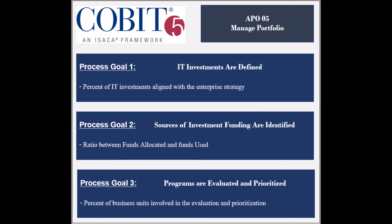The process has six process goals. The first process goal is to ensure that the investments are aligned with the enterprise strategy, and is measured by the management satisfaction level with the IT contribution to the enterprise strategy. The second goal is to identify the sources of investment funding, and its achievement is measured by the ratio between funds allocated and funds used.